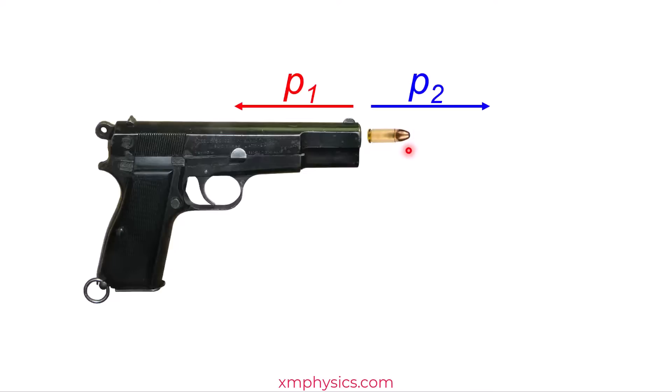So the total momentum must be conserved. But the total momentum started out as zero and therefore it must remain as zero. So to remain as zero, these two momentums must be equal but opposite. So the total momentums are equal but opposite, but the speeds of the bullet and the gun are different. Why is that?